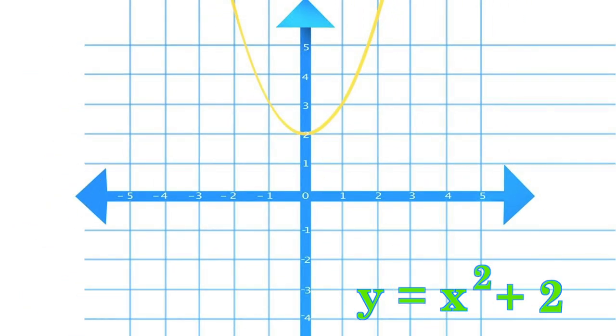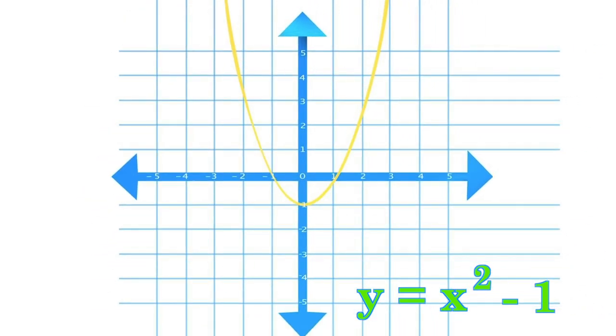If we add 2 to the equation, we can shift all the values up on the y-axis by 2. If we subtract 1, we can shift all the values down by 1.